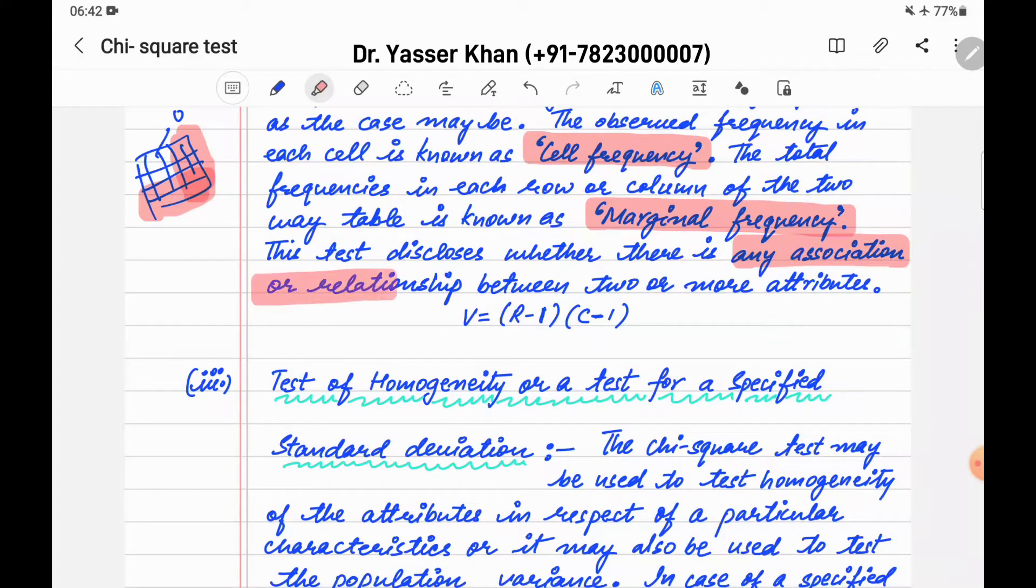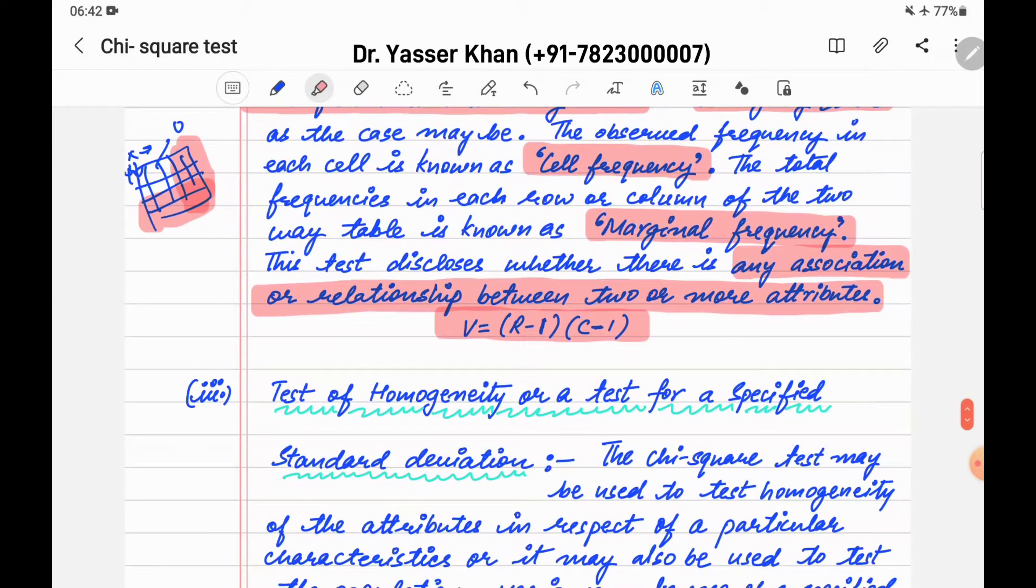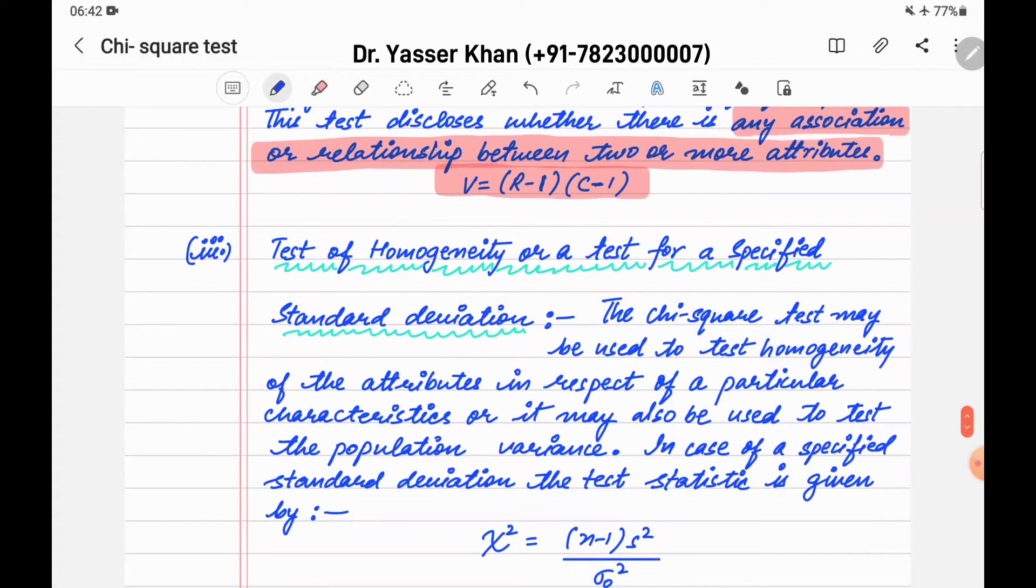This test discloses whether there is any association or relationship between two or more attributes. We try to know if there is a relationship or association or not. The degree of freedom in the case of contingency table is row minus one multiplied by column minus one. So let's go to part 3, the third use or application.